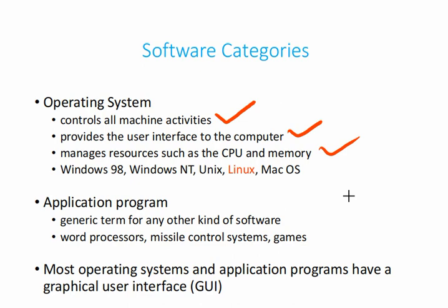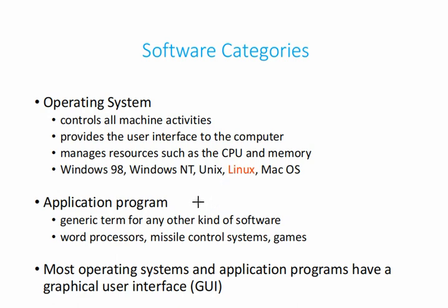The operating system allocates storage space to application programs. Application programs — like games or Microsoft Word — do not know how to interact with hardware directly, so it is the operating system that allows them to do so. Application programs are software designed for a specific purpose. A generic term covers word processors, control systems, games, and other software made for a specific task.